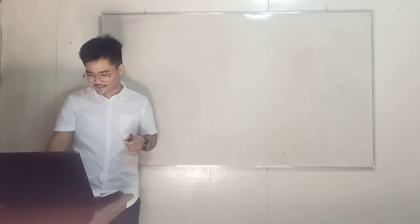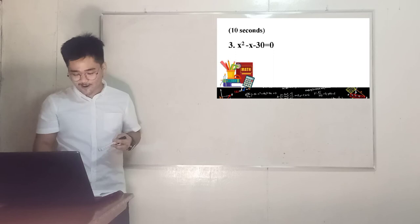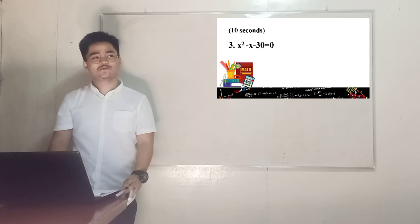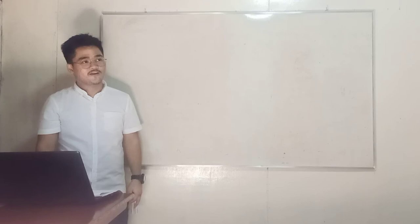Number 3: We have x squared minus x minus 30 equals 0. Time starts now. Okay, time's up. Raise your boards. The answer is x equals 6 and x equals negative 5. Green team got the correct answer, red team got the correct answer, also blue and orange got the correct answer. Very good.